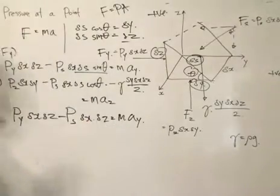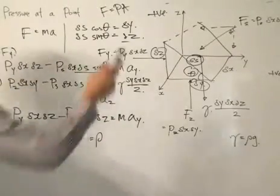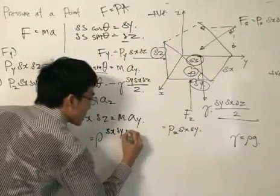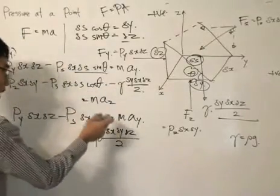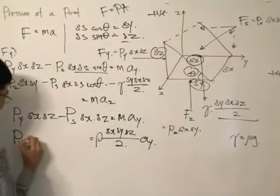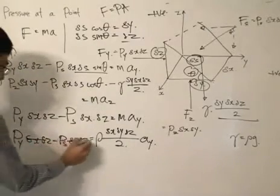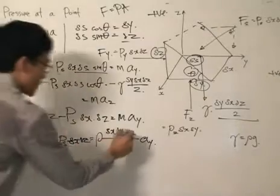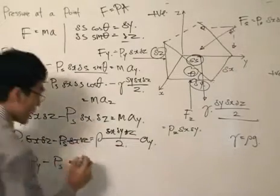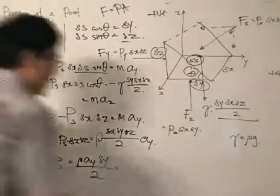The algebra is now quite friendly. We re-express the mass as density times volume, where the volume is delta X times delta Y times delta Z divided by 2. Substituting that in gives us mass times acceleration in the Y direction. Dividing throughout by delta X and delta Z, the first equation we have is: pressure at Y minus pressure at S equals density times acceleration in the Y direction times delta Y divided by 2.